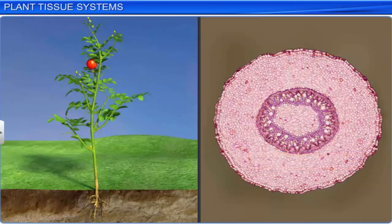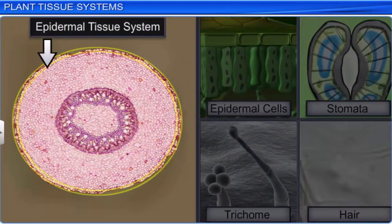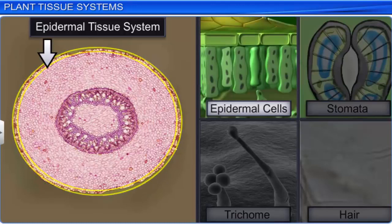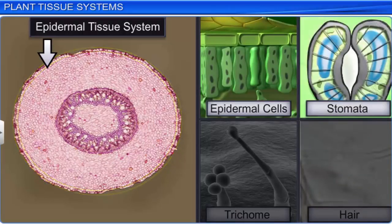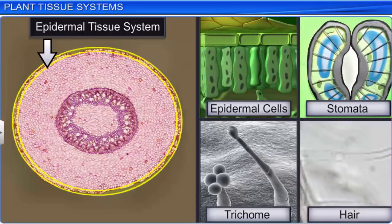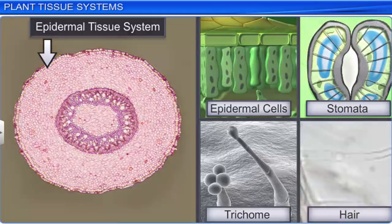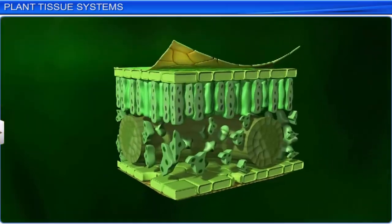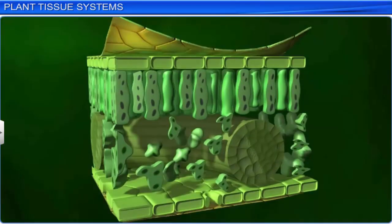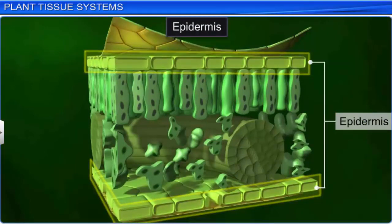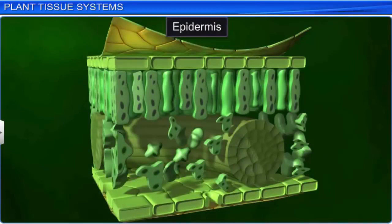Let's begin by studying the epidermal tissue system. As the name suggests, this tissue forms the outermost covering of the plant body. It consists of epidermal cells, stomata, and epidermal appendages including trichomes and hairs. Epidermis refers to the outermost layer of the primary plant body. It is a continuous layer of elongated and compactly arranged cells. Epidermal cells are parenchymatous in nature, and their cell walls are lined with a small amount of cytoplasm that has a large vacuole.